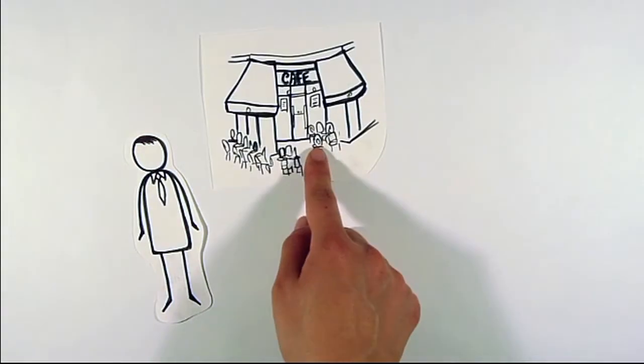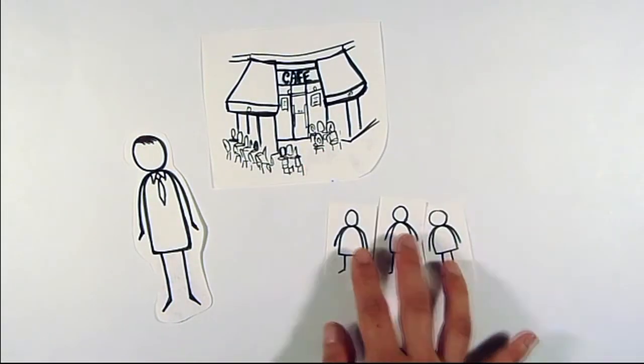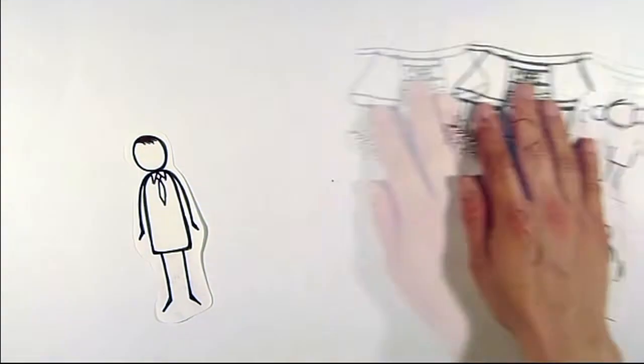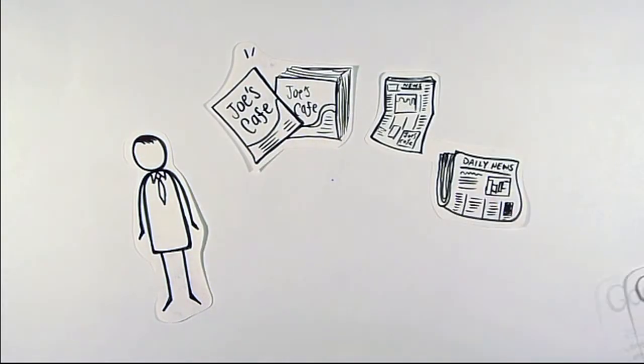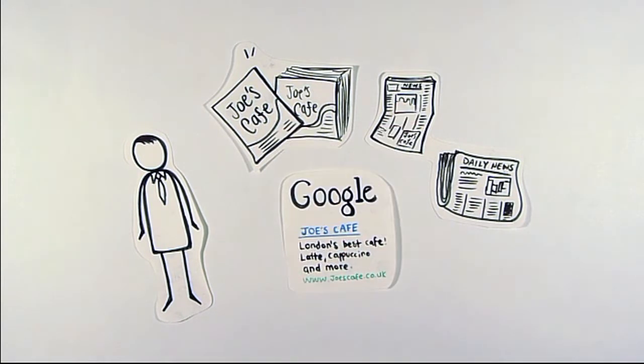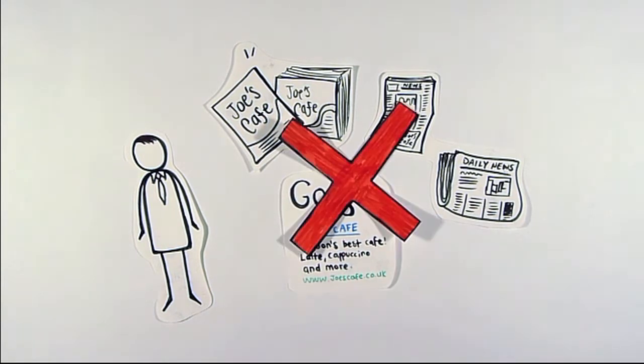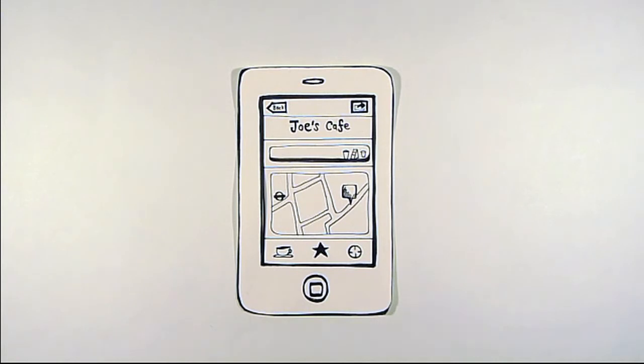Meet Joe. Joe owns a cafe in town. He'd like more customers. He tried Google AdWords, flyers, and local advertising, but can't seem to measure the impact of these types of marketing. Then Joe made his own app using App Splash.